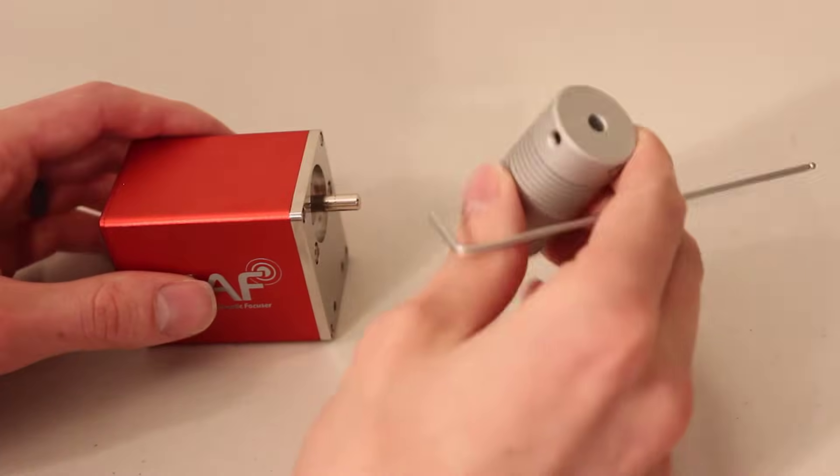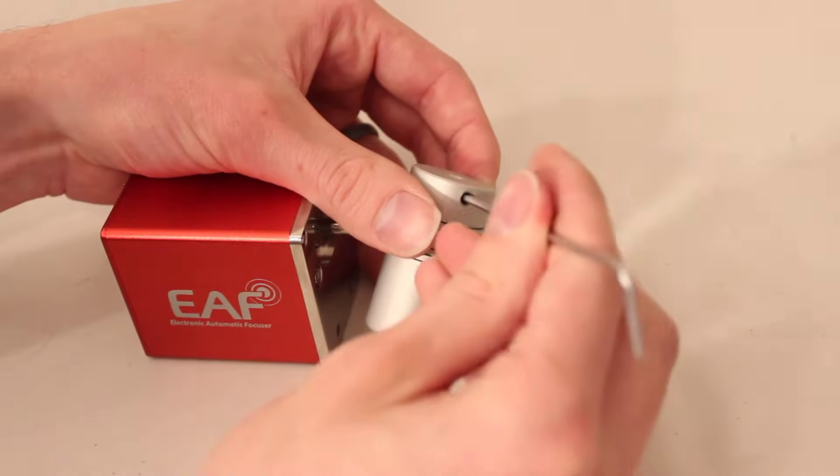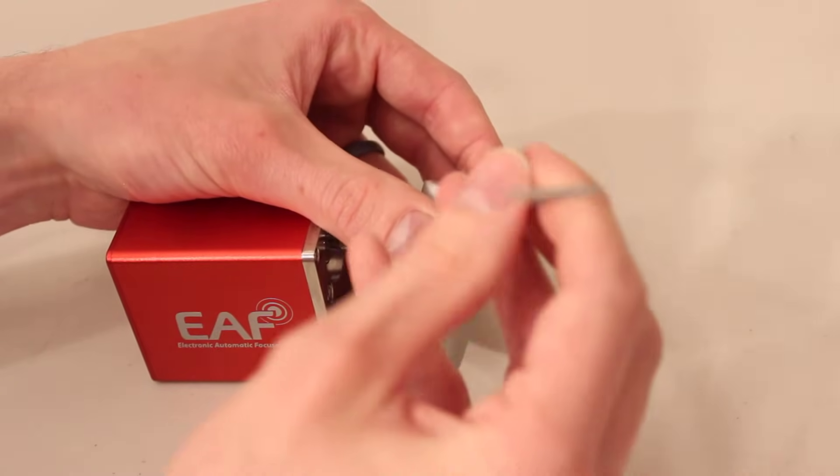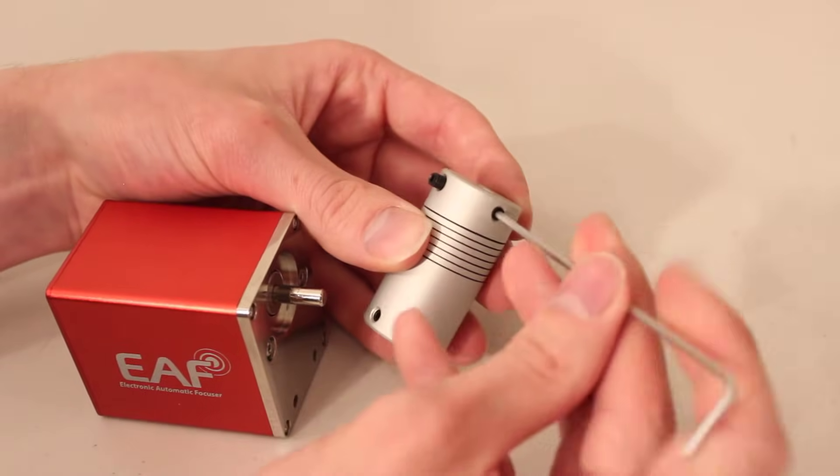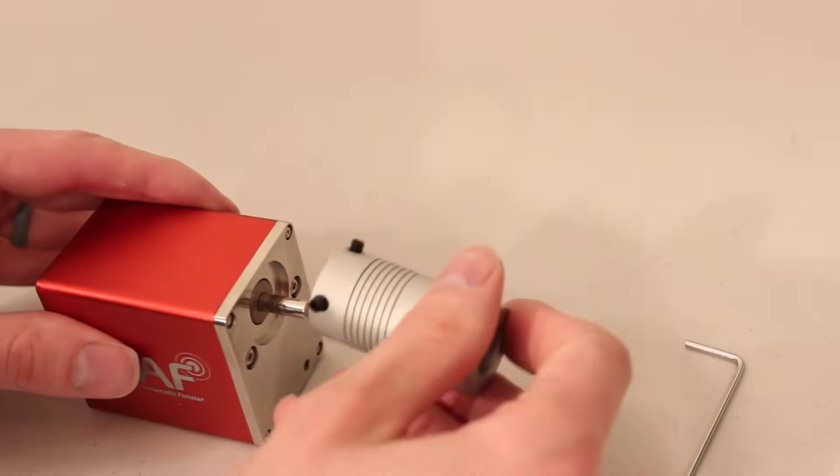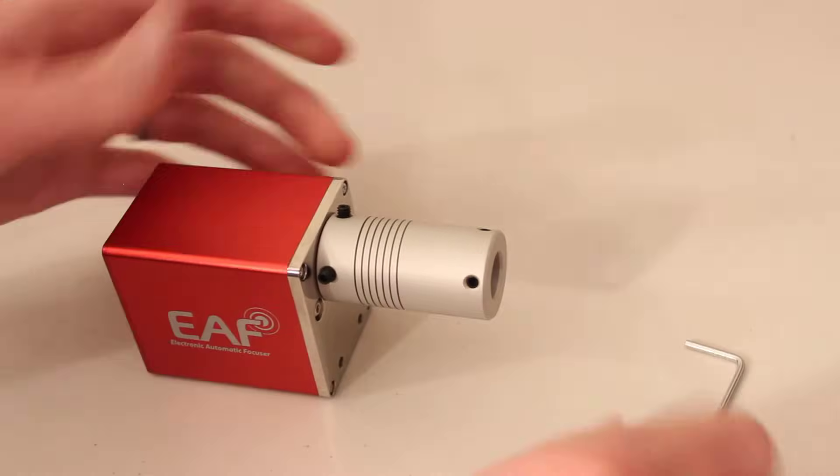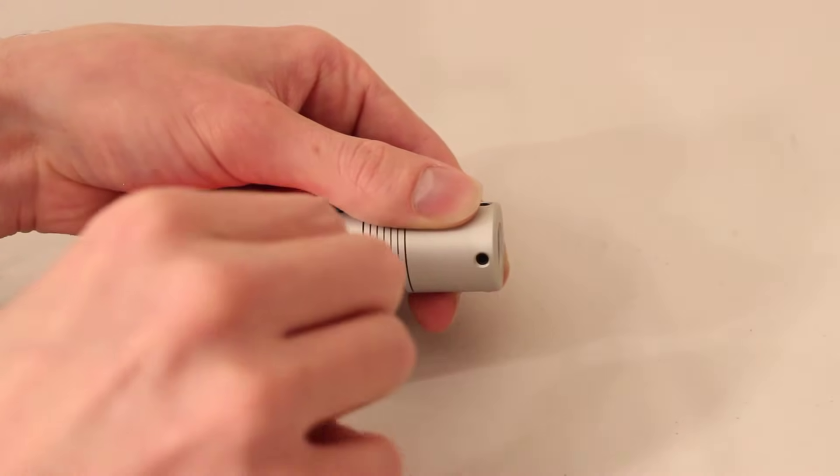Now that the bracket is installed on the telescope, I'm going to install the coupler to the autofocuser itself. To do that, I'm just taking this two millimeter wrench and undoing these grub screws here. There's two of them. That should be enough, and then I'm just going to slip that over the focuser and re-tighten these grub screws down.